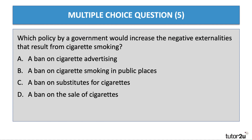Question 5: Which policy by a government would increase the negative externalities that result from people smoking cigarettes? This could be an example of government failure where policy causes increased negative externalities. The right answer is C. If you ban substitutes — e-vaping, nicotine patches, etc. — demand for substitutes goes down, more people will smoke, and thereby create more external costs.